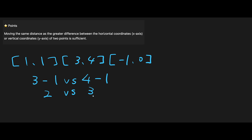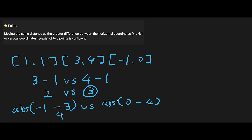We take the bigger number — in this case three — so between these two points we need three seconds. For the next two points, the horizontal distance is |(-1) - 3| = 4 and the vertical distance is |0 - 4| = 4, so four versus four — they're the same. So that segment takes four seconds, and the total is three plus four equals seven seconds.